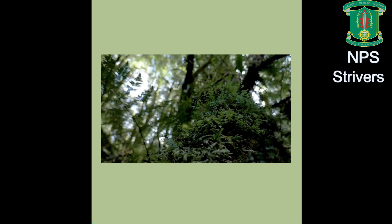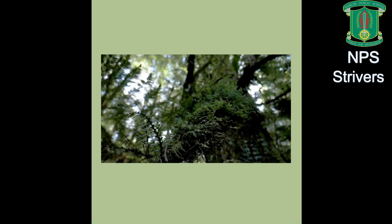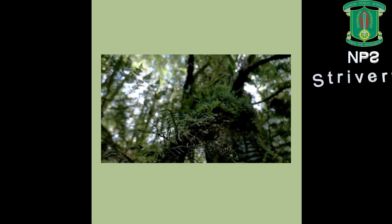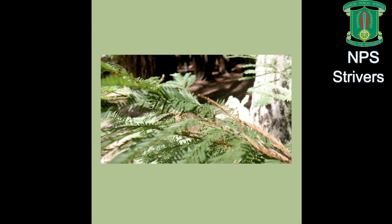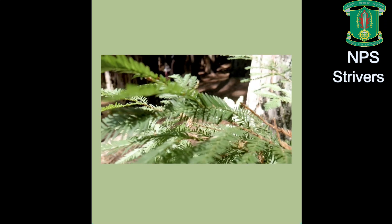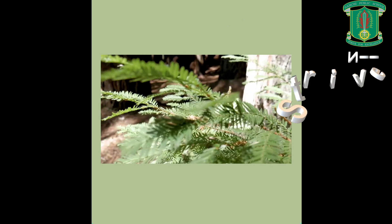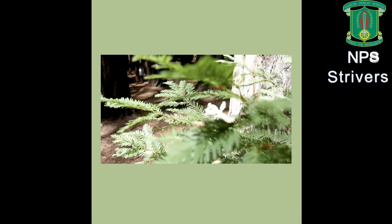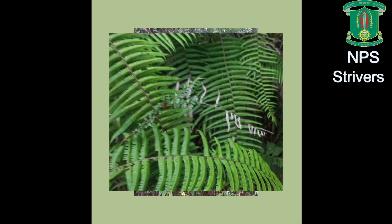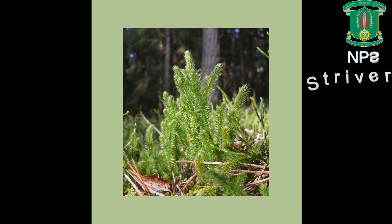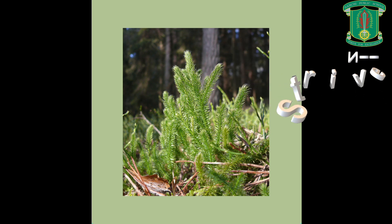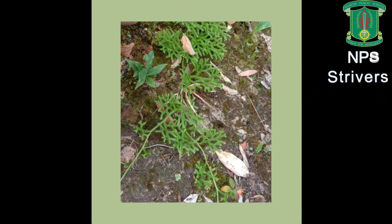Pteridophytes are the first terrestrial seedless vascular plants, comprising about 13,000 species. These are commonly called ferns. They are spore-producing vascular plants found in humid, tropical, and temperate areas. The specimen shown is Lycopodium clavatum, commonly known as club moss, ground pine, or bull's claw. They are found in tropical and subtropical regions.